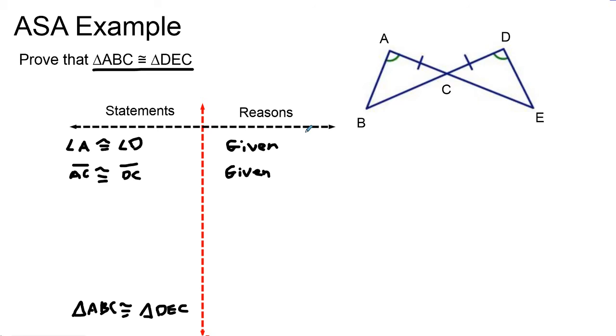So I have my reason—the vertical angles theorem. I can say this angle and this angle are congruent. So I can say angle ACB is congruent to angle DCE.